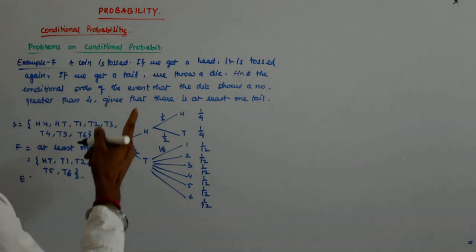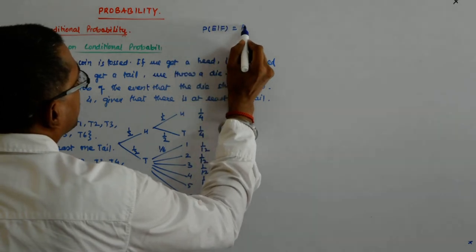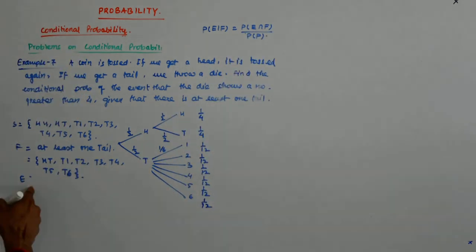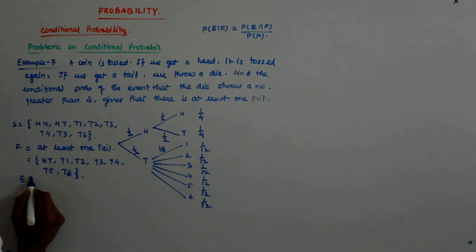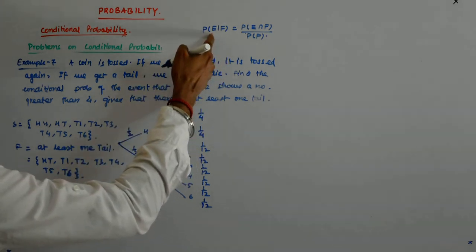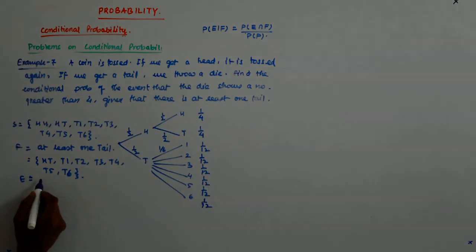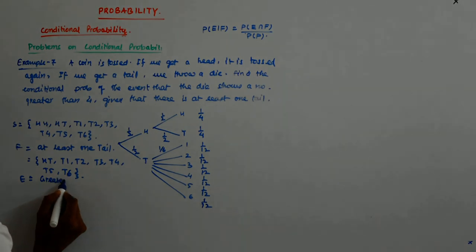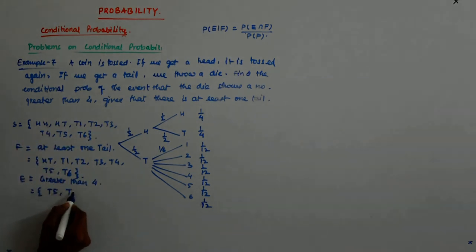And what is E? We have seen P(E|F) = P(E∩F) / P(F). So F is whatever has happened. E is the probability of getting a number greater than four. So, probability of getting a number such that the die shows a number greater than four.